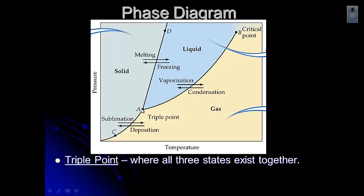The triple point here is where all three states exist together. So if we can get this particular substance at the pressure and the temperature of point A, you can have the solid, liquid, and gas all together in the same container.